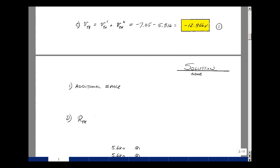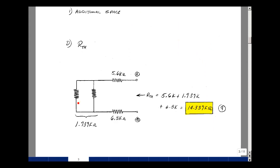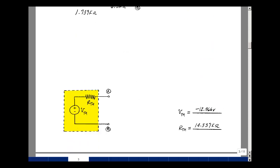We need to find the Thevenin resistance. Set all the independent sources equal to zero. We had a short circuit here for the voltage source, and an open for the current source. Found these two in parallel is 1.939K, and now that's in series with these two resistors, 5.6K and 6.8K. Adding all those together, we get 14.339K. That was worth nine points, no partial credit. Lastly, we can express our answer with the Thevenin voltage and Thevenin resistance.